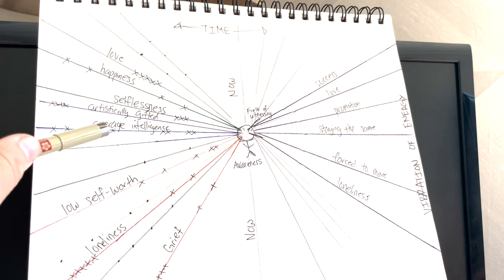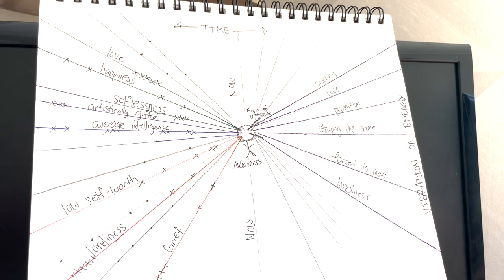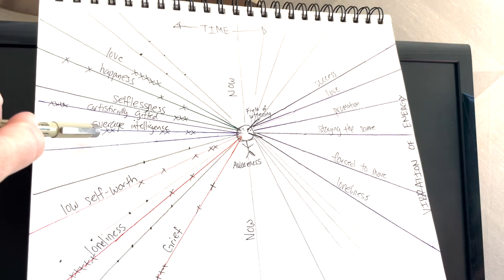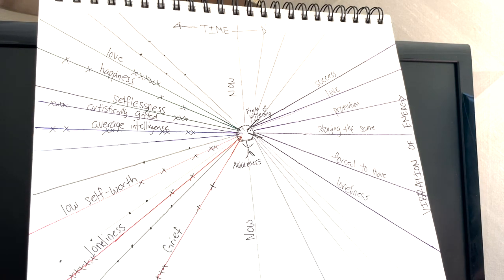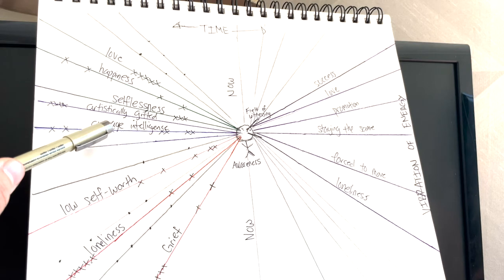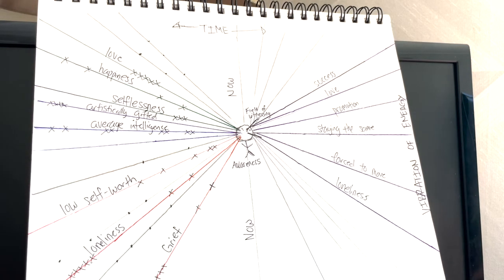So we see something, for example, like average intelligence, which is a comparison between us and our peers. So there are moments in our past life, not meaning a previous lifetime, but in the past, where we had experienced something that confirmed this belief of average intelligence. Meaning maybe you only got C's in school. And we can kind of see right here that there's a little bit of a pattern. It's like two, two, two. So this is like something that's reoccurring, cyclical.